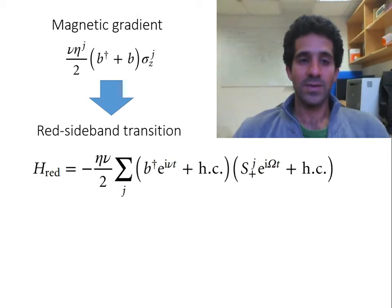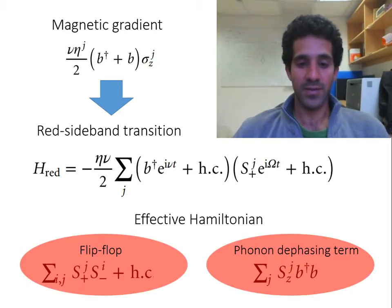By doing so, the magnetic gradient becomes the red sideband transition in the dressed basis, which yields effectively, in the rotating wave approximation, the flip-flop Hamiltonian, in addition to a phonon-dephasing term.